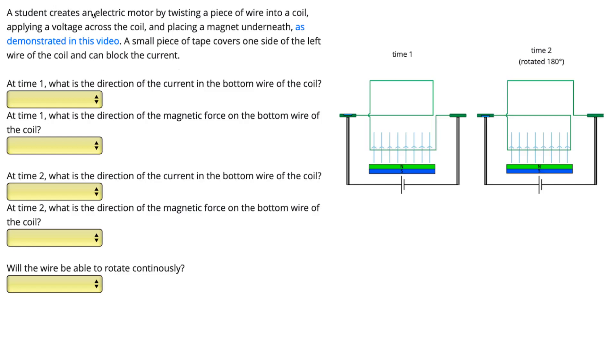In this question, a student creates an electric motor by twisting a piece of wire into a coil, as shown in the diagram. Here's our coil shown at time one, and you can see it at time two also.